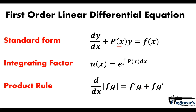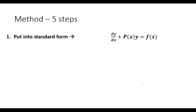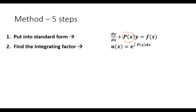Let me show you the five steps behind solving this type of problem — fairly easy steps to follow, just remember them in order. Step one: put the equation into standard form so you can identify p(x). Step two: find the integrating factor u(x), which is e raised to the antiderivative of p(x) dx.